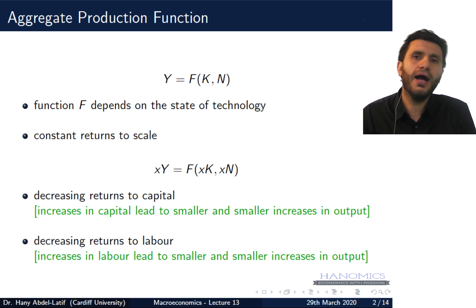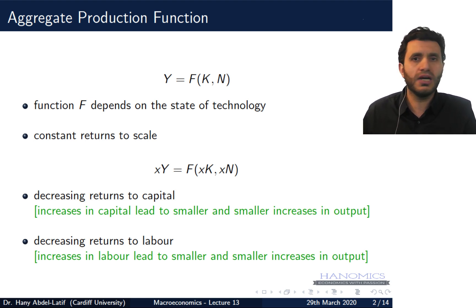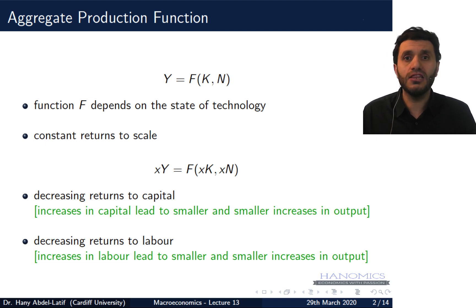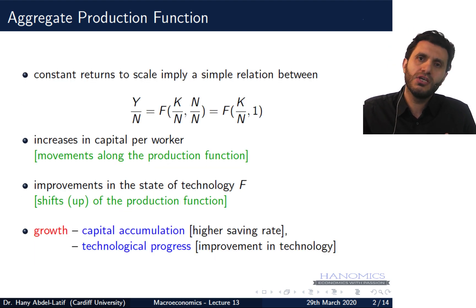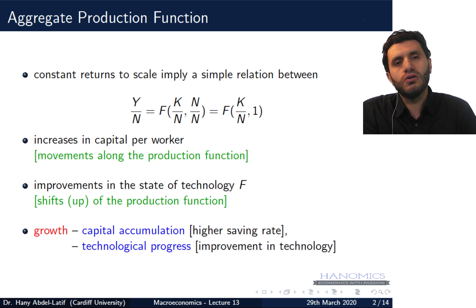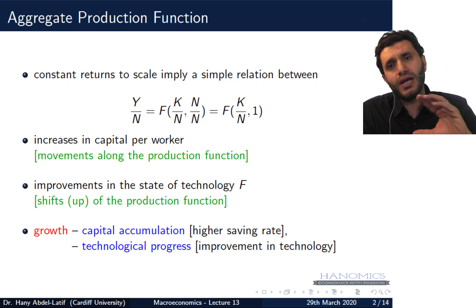Decreasing returns to labor means if you double the amount of labor you use and output changed by less than double, then this production function exhibits decreasing returns to labor. When we plot the production function, you will see how that translates into the graph and into the slope of that production function. Rather than looking at the output level, we will look at output per worker — dividing the production function by N, the number of workers.